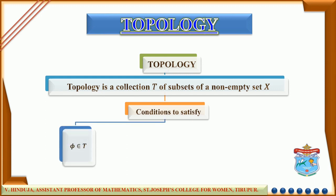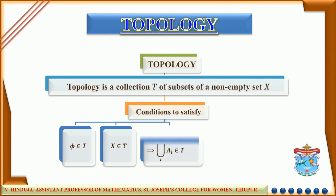The first condition is the empty set should belong to T. The second one is the set X should belong to T. The third condition is the union of the elements of any sub-collection of T is in T.